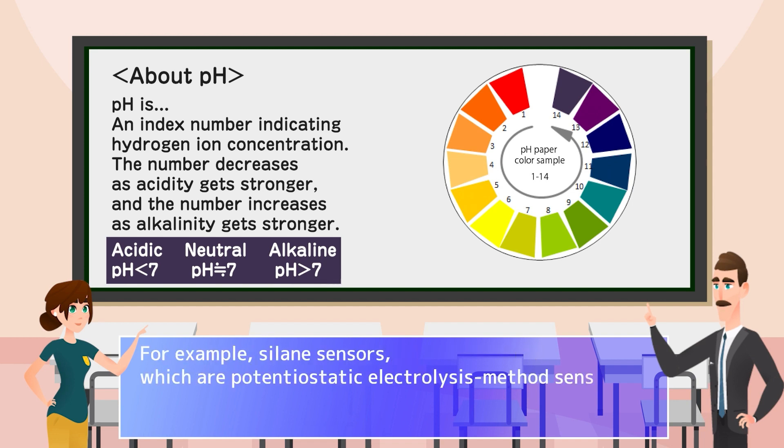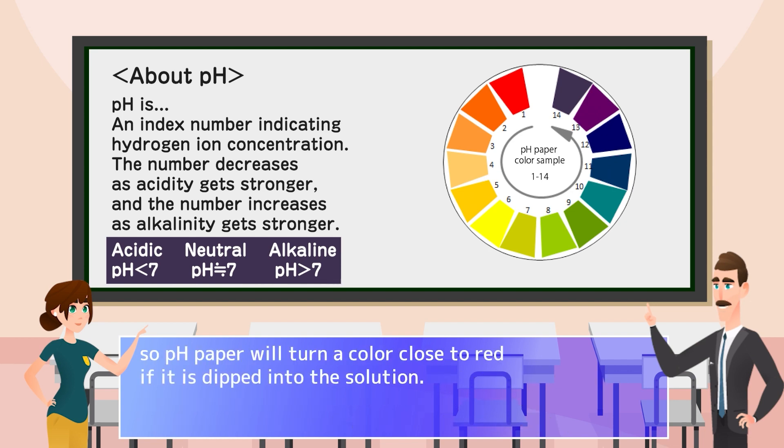For example, silane sensors, which are potentiostatic electrolysis method sensors, and phosphine sensors use a highly acidic aqueous solution called sulfuric acid in their electrolyte, so pH paper will turn a color close to red if it is dipped into the solution.